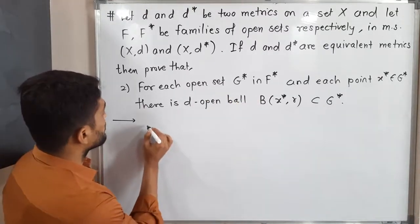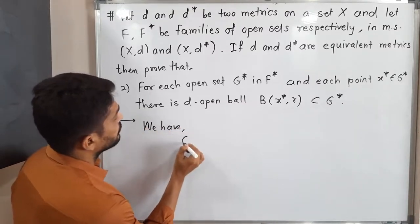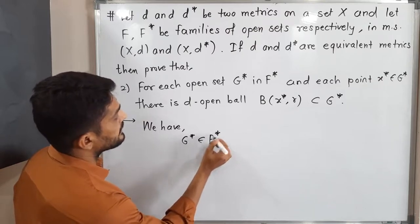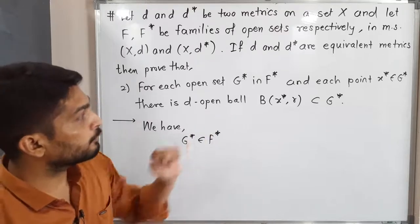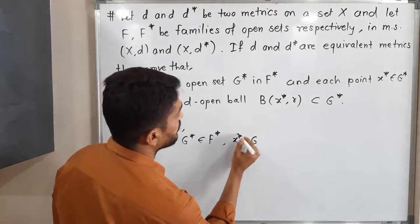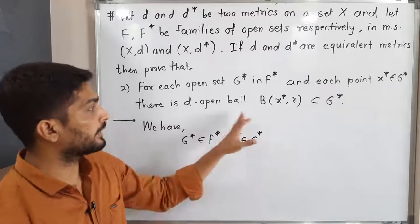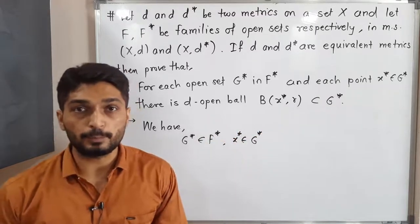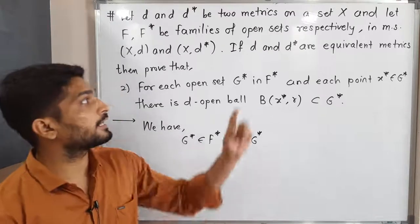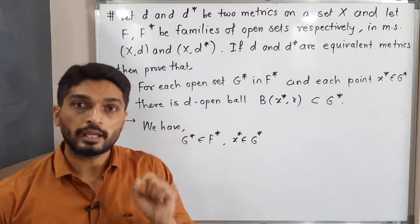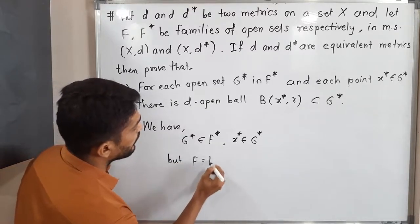So we have G star belongs to F star, which means G star is a D star open set — that is why it belongs to the family of D star open sets F star. And we have a point X star belonging to G star. We have to prove that there exists a D open ball B(X star, R) which is a subset of G star. Since G star belongs to F star, and D and D star are equivalent metrics, we have F is equal to F star from equation one.